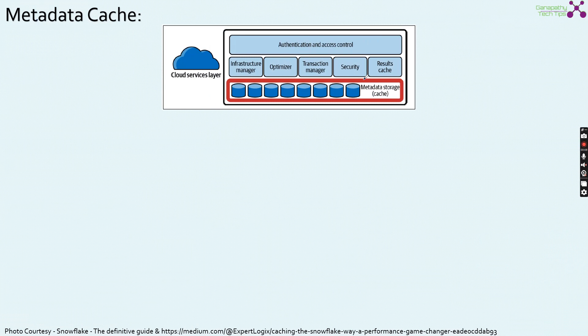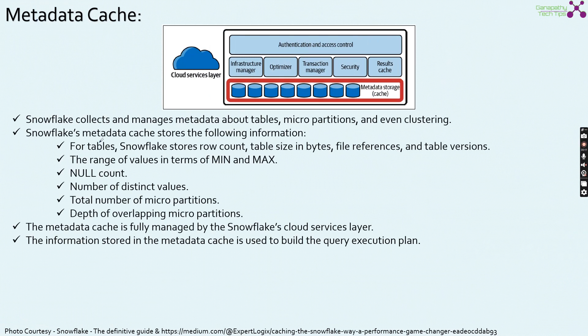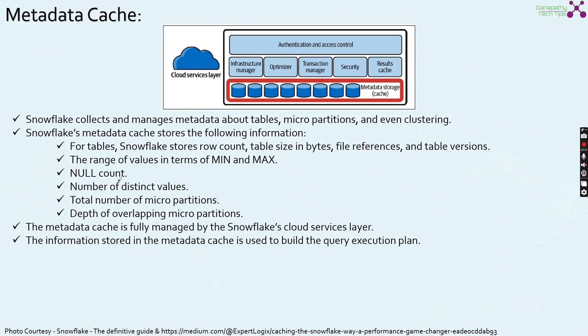The second caching layer in the cloud services layer is the metadata cache. Snowflake collects and manages metadata about tables, micro partitions, and even clustering data. Snowflake's metadata cache stores the following information: row count, table size, file references, table versions, range of values (min and max), null count, number of distinct values, total number of micro partitions, and depth of overlapping micro partitions — all stored here.